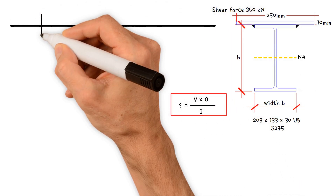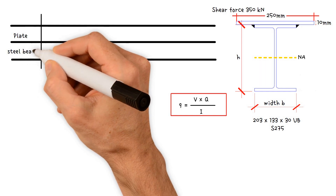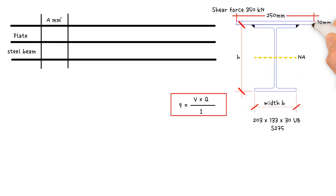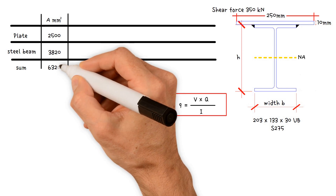To make things easier, we'll build a table to help us record our findings. We have a plate and we have a steel beam. We need to find the areas for each of these. The area of the plate is the width 250 mm times the thickness 10 mm, which gives us a value of 2,500 mm². The area of the universal beam 203×133×30 is 3,820 mm², which you can find in the Blue Book Steel Universal Beam Table. Summing those up, we get a total area of 6,320 mm².